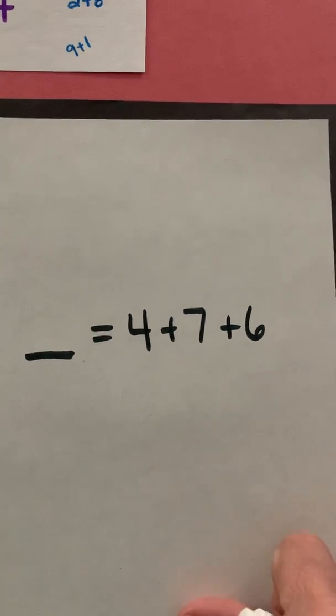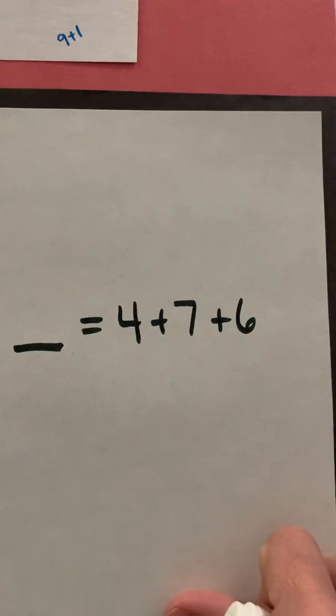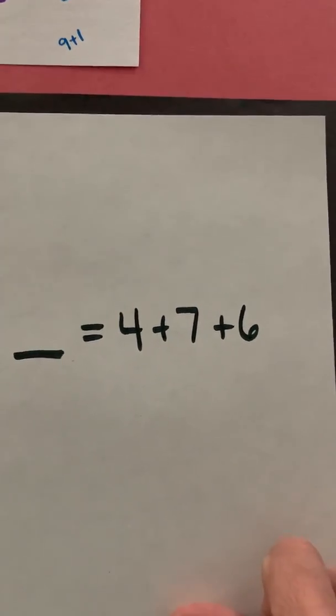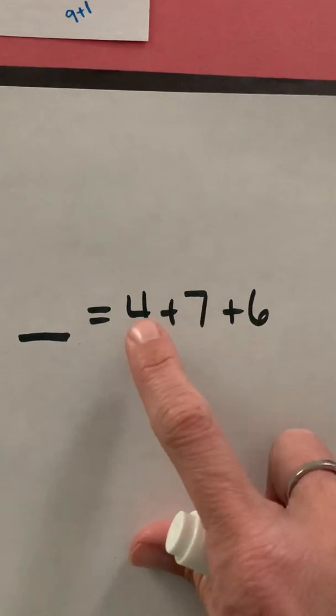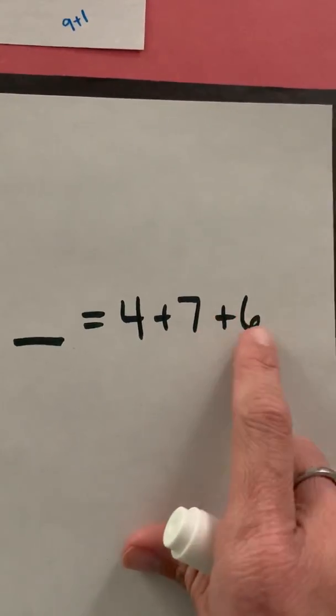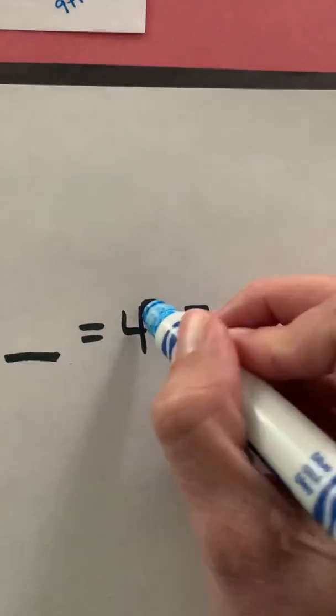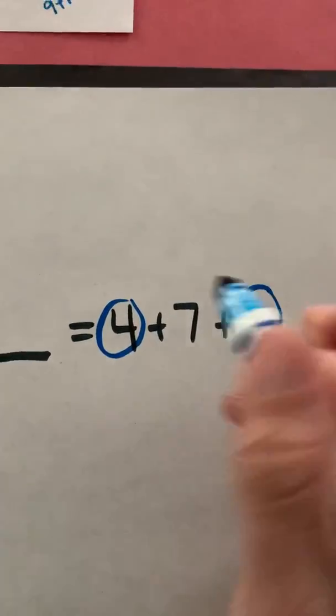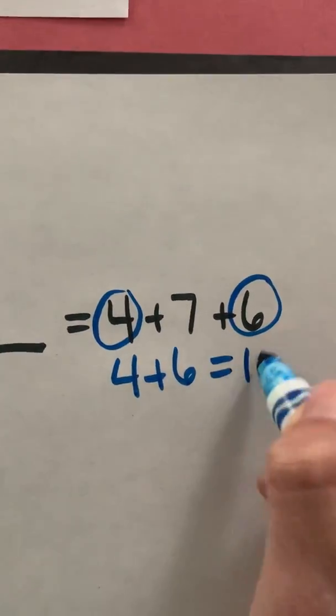So just like before remember our focus today is being able to add three addends by finding numbers that will add up to give us 10. So I start looking at my numbers here and I start thinking that I know four and seven will not give me ten, seven and six will not give me ten, but I do know that four and six will give me ten so four plus six equals ten.